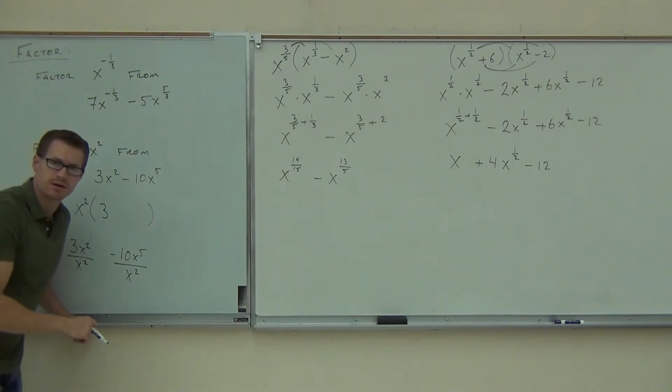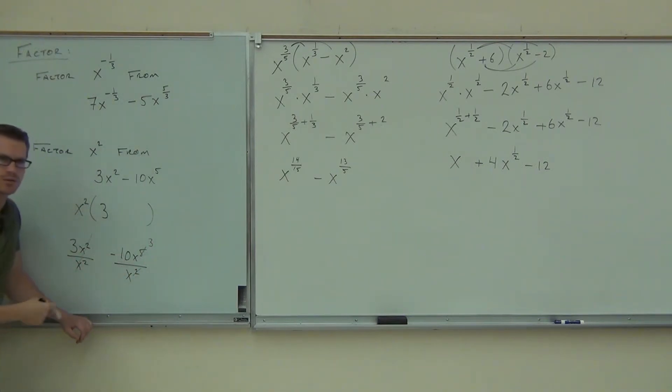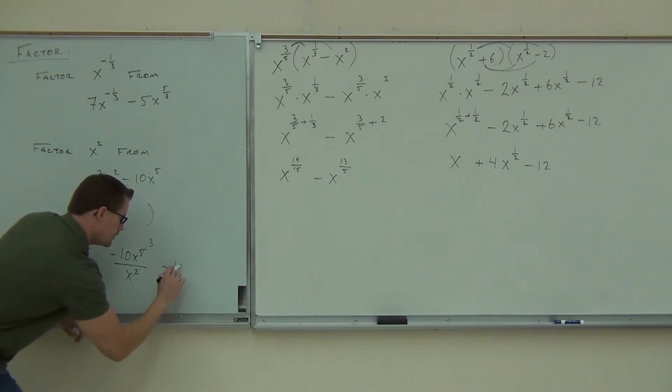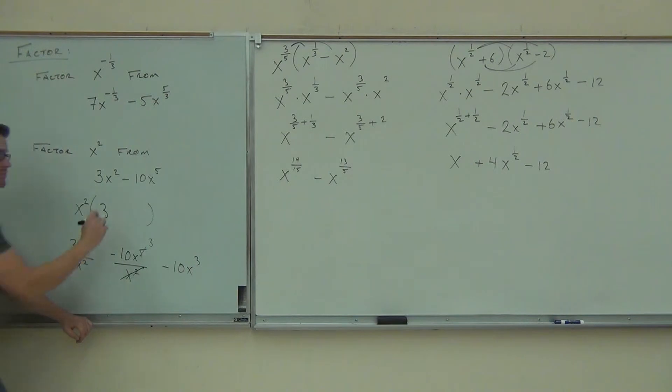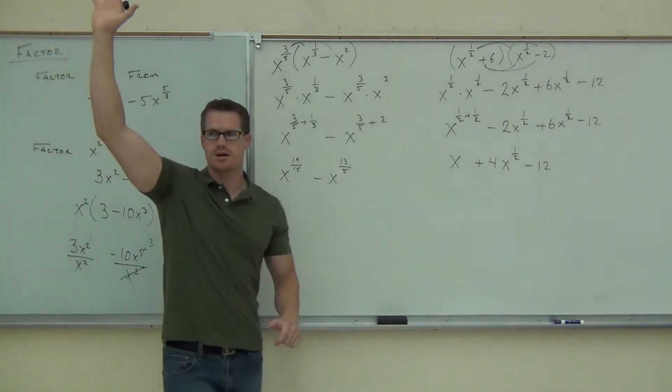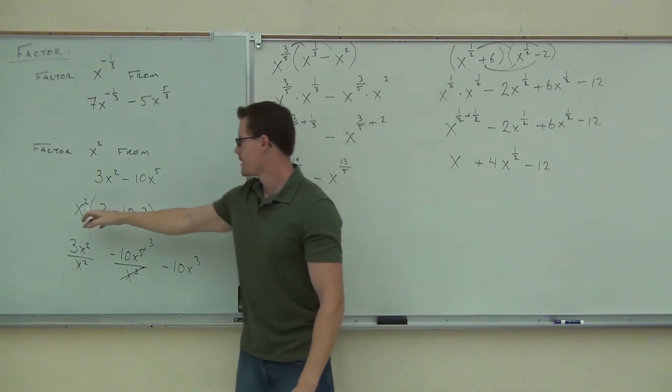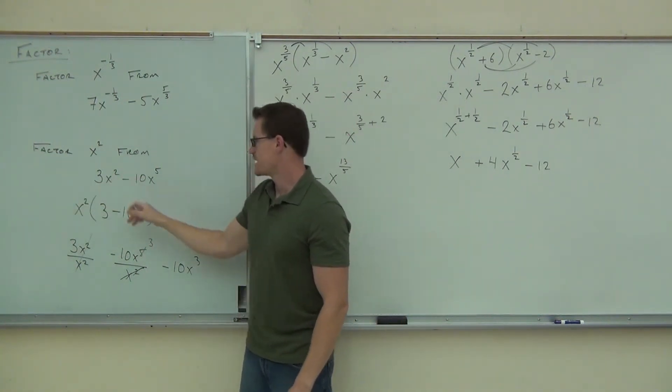Oh, you do subtract. Remember that? x to the fifth over x squared, you take the 5 minus 2, you get 3. Some people do that. What are you doing when you do that? Well, you're matching up numbers, but really, you're subtracting. Negative 10x to the third is what you get out of that whole thing. And so you put minus 10x to the third. Raise your hand if you're understanding how we got all that stuff. And you can check it with distribution, right? 3x squared minus 10x to the fifth. That would be this exact thing.